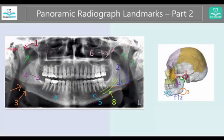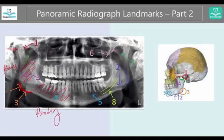Number three, we have this area — this is the angle of the mandible. The vertical part is called the ramus and the horizontal part is called the body. This part that joins them together is simply called the angle, and you can see number three over here.